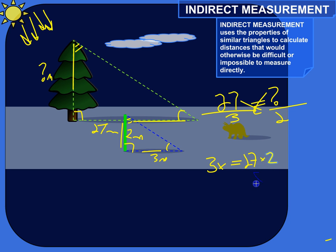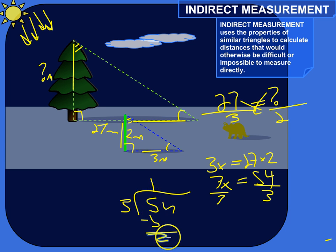So 3x equals 54, and you can simply solve for x. X is being multiplied by 3, so you can just divide both sides by 3. 54 divided by 3. 3 goes into 5 once. You got 2 left over after that, bring down the 4. 3 into 24 goes in 8 times. 8 times 3 is 24, no remainder. So that missing side is 18 meters.